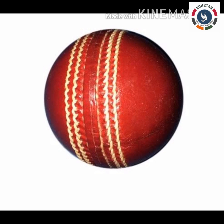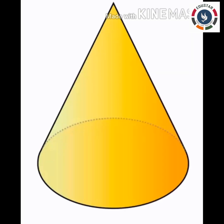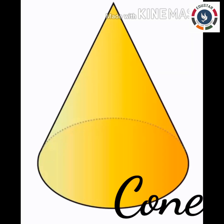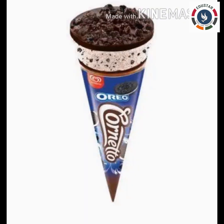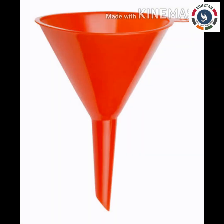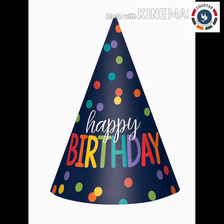Let's see the next solid shape — a cone. A cone has a circular face. It can roll because it has a curved surface. Examples of cone: ice cream cone, funnel, party hat, and traffic cone.